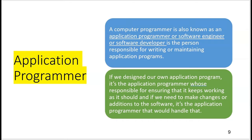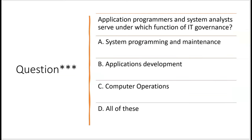The application programmer — also known as software engineer or software developer — is the one writing or maintaining the program, coding and testing it. If we're designing our own application, the application programmer is responsible for ensuring it keeps working as it should. If changes or additions to the software are needed, the application programmer codes and handles that once the changes have been approved.